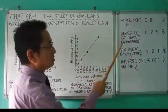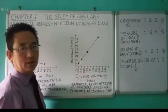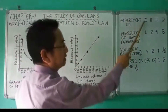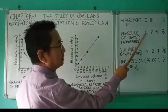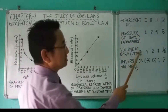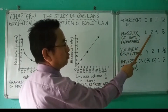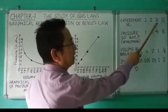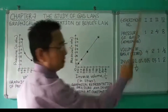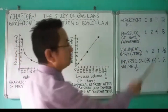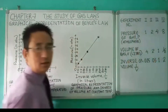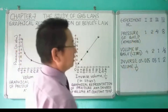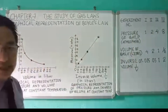When we multiply the values of P and V, we will get the same result in all the experiments. In experiment 1, 1 × 4 = 4 liter·atmosphere. In experiment 2, 2 × 2 = 4 liter·atmosphere. In experiment 3, 4 × 1 = 4 liter·atmosphere. And 8 × 0.5 = 4 liter·atmosphere. In all the experiments, we have got the same result.